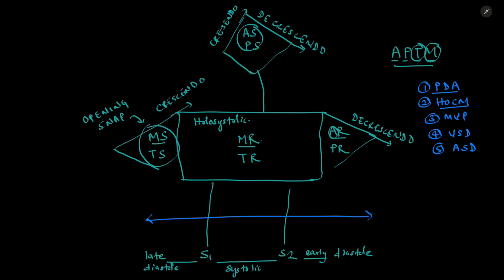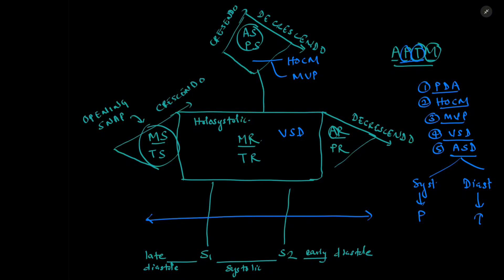For hypertrophic obstructive cardiomyopathy, it would be a systolic murmur. So we can add it here. And mitral valve prolapse will also be a systolic murmur. And similarly, ventricular septal defect will be a holosystolic murmur. And ASD, it can be systolic or diastolic. If it is a systolic murmur, it would be best heard at the pulmonic area. If it is diastolic murmur, it would be heard at the tricuspid area. And this is the second and third, respectively, systole and diastole.